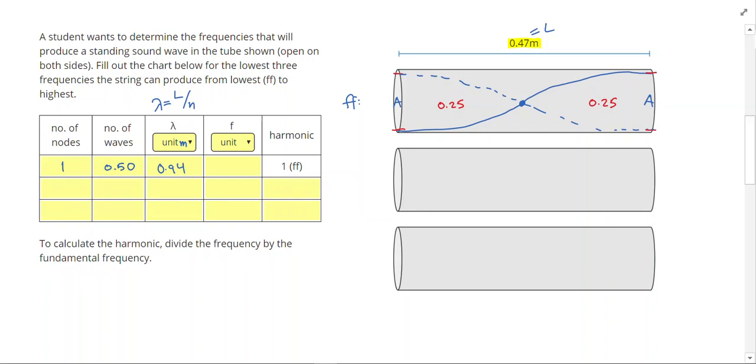Next to find my frequency, I'm going to use the equation frequency equals velocity divided by wavelength. Since this is a sound wave in the air, I'm going to use the speed of sound. So V is going to be equal to 343 meters per second. I will do 343 divided by 0.94, and that gives me 365 hertz.